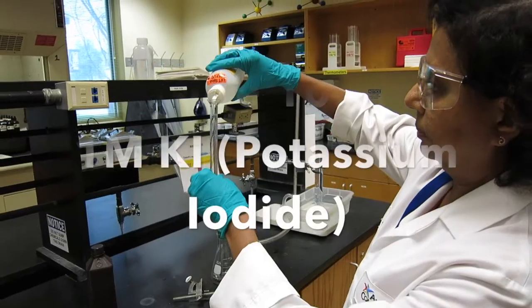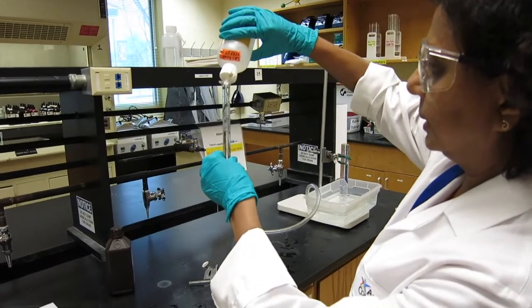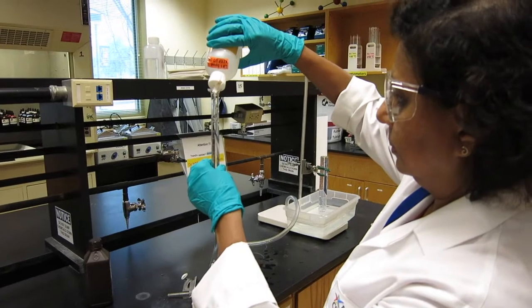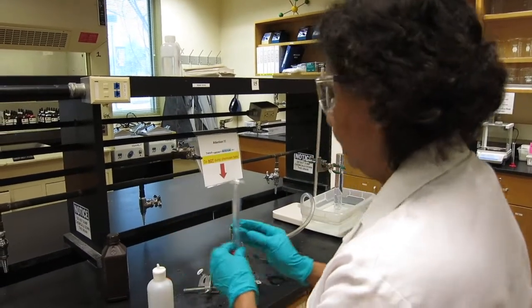Now we're going to measure the potassium iodide, the catalyst. Is it 10 milliliter? Yes. So we're measuring 10 milliliter of the potassium iodide. That's one molar, so it's pretty concentrated.